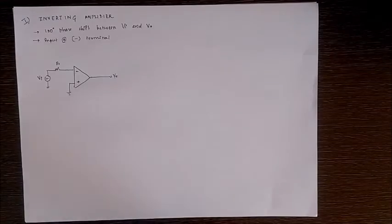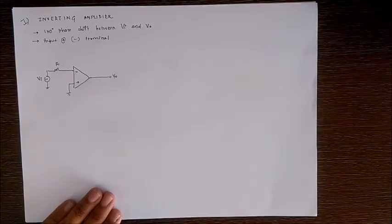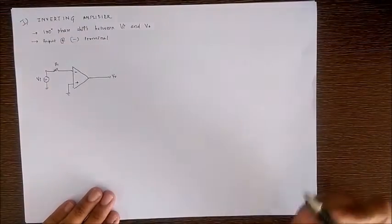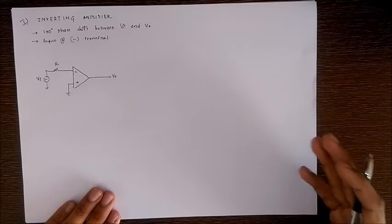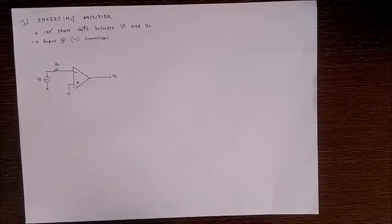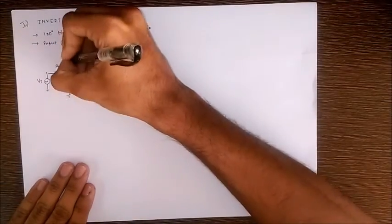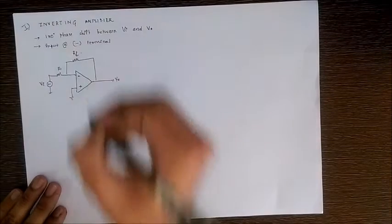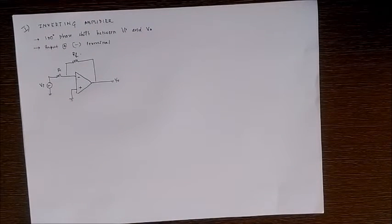An ideal OPAMP has high open loop gain, so if we give a small voltage it will produce an extremely large voltage at its output — in ideal cases it goes to saturation. So we have to limit it and bring it down from saturation so we can observe the waveform. We give a negative feedback, which limits the voltage available at the input so that we get the required waveforms at the output.